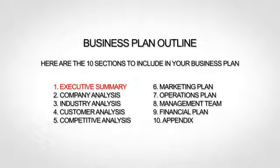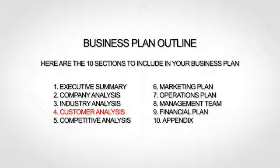The first section is your executive summary, which is essentially the introduction to your business plan. The next section is your company analysis, which gives a little more background. Next up is your industry analysis, where you talk about your market and trends. The fourth section is your customer analysis, where you go more in depth about your target market. The fifth section is your competitive analysis, where you provide an analysis of your competition, including what differentiates you from your competitors.